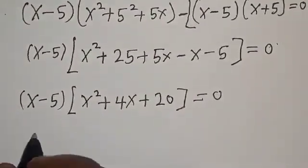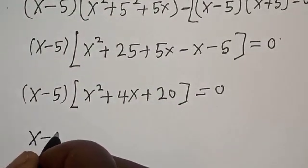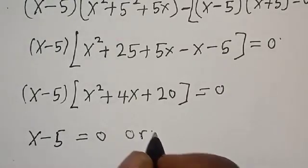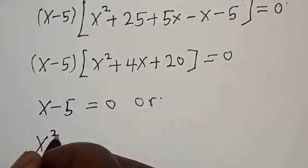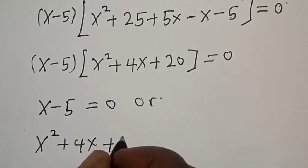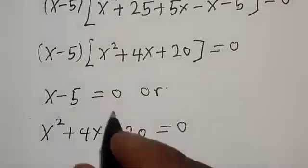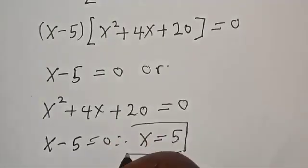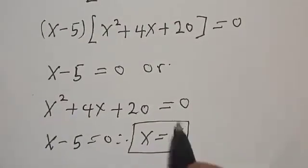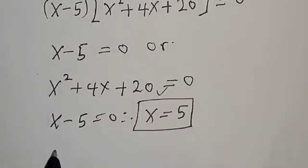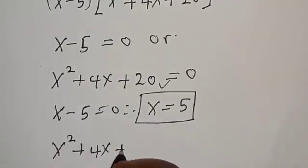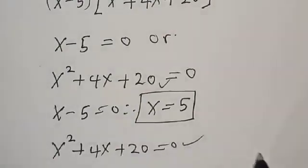We have two cases here. Case one: x minus 5 is equal to 0, giving x is equal to 5. That is one solution. Case two: x squared plus 4x plus 20 is equal to 0. This is a quadratic equation, and we can solve it using the quadratic formula.